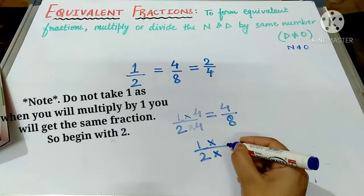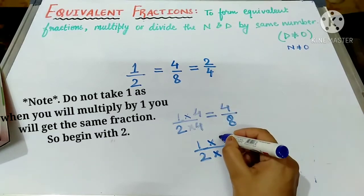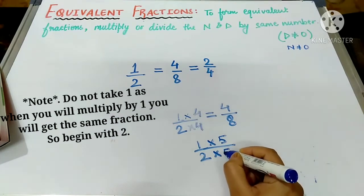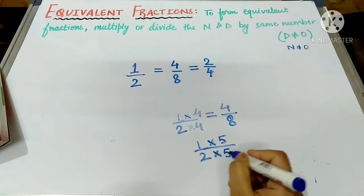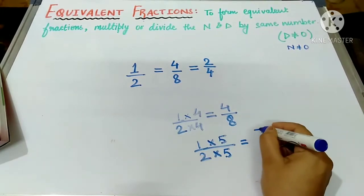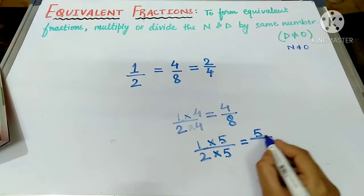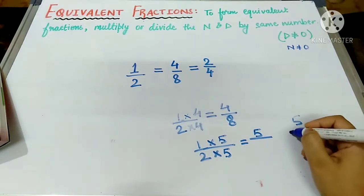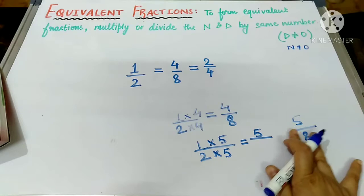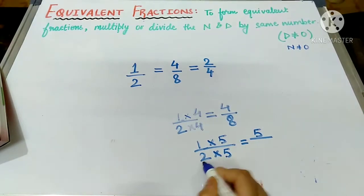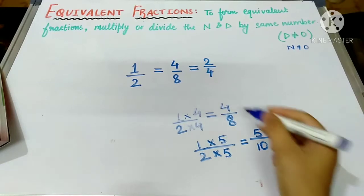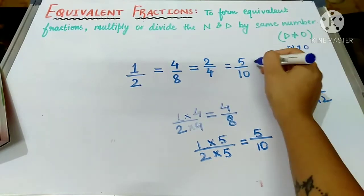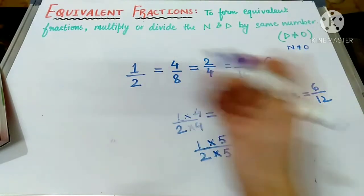It is not necessary to multiply by four only — you can multiply by any number other than zero in the numerator and denominator. The same number should be used in both. Suppose I take five: five ones are five, and five twos are ten, giving five upon ten as an equivalent fraction. Six upon twelve will also be an equivalent fraction. All these fractions will be equal.